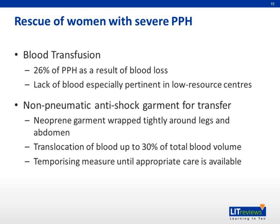Now we go on to rescue measures for women with severe PPH. This is more relevant in locations with low resources where tertiary centers with modern equipment are far away. We know that 26% of PPH deaths are the result of blood loss, and therefore blood transfusion is definitely required when severe PPH happens. In low-resource centers, difficulty obtaining sufficient blood products is a challenge. The second measure is the use of a non-pneumatic anti-shock garment for transfer — this neoprene garment is wrapped tightly around the legs and abdomen, allowing translocation of up to 30% of total blood volume from the periphery into central circulation as a temporizing measure during transport.